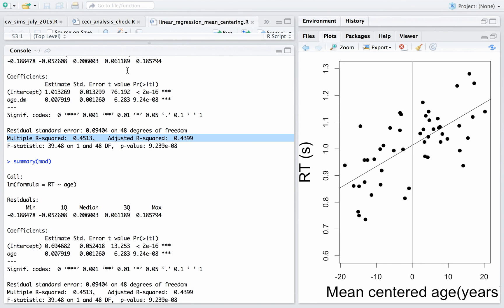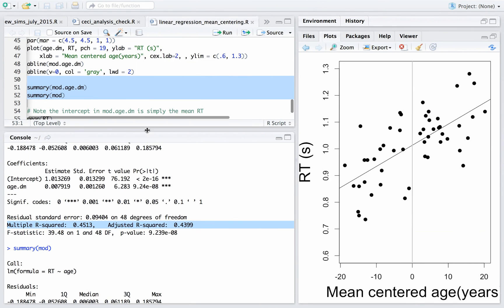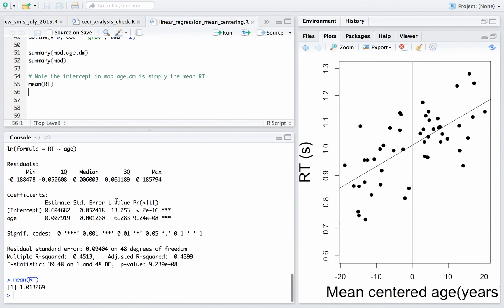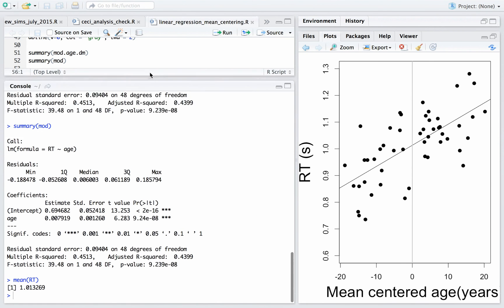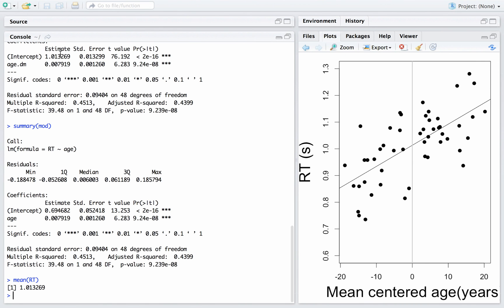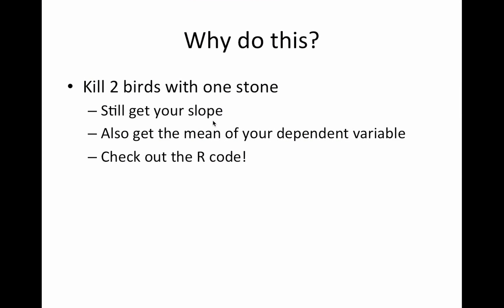And the last thing I had there is, hopefully to convince you if you weren't already, that if you look at the mean reaction time, it's 1.013, which was our parameter estimate in our model with age d-mean. So see down here at the bottom, the mean reaction time is 1.013. Go up to the model fit, the parameter estimate is 1.013. So it's exactly what it'll be every time.